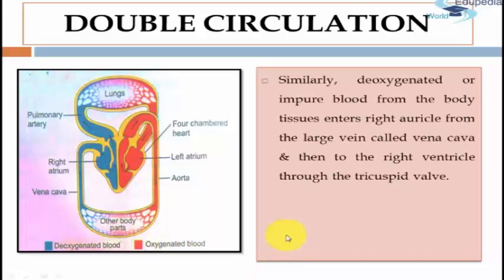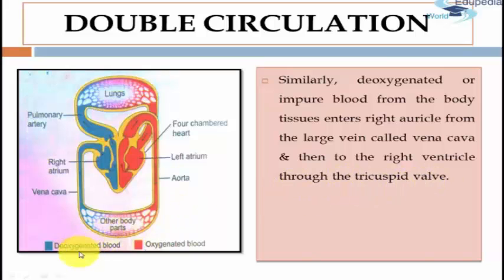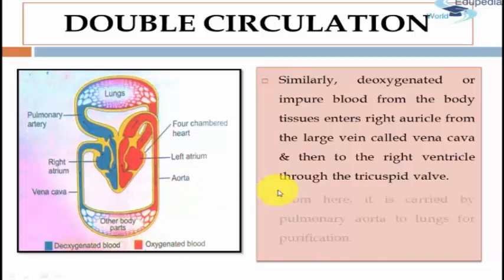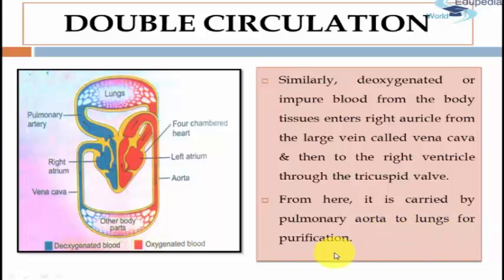Similarly, the deoxygenated blood or impure blood from the body tissues enters the right auricle from the large vein called vena cava and then to the right ventricle through the tricuspid valve. Deoxygenated blood is denoted with blue colour and it enters from the body tissues through the right auricle via the large vena cava and then to the right ventricle through the tricuspid valve. From here it is carried by the pulmonary aorta to the lungs for purification.